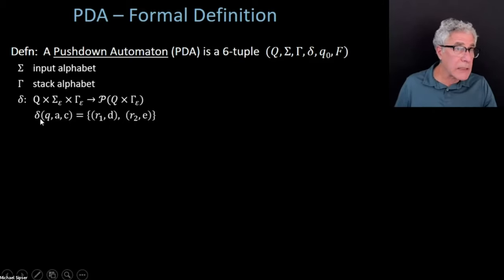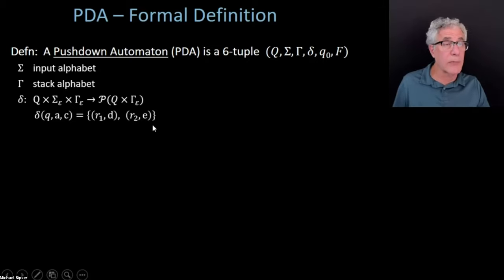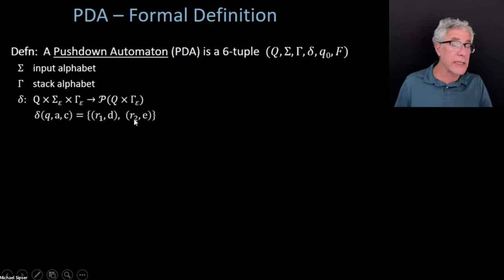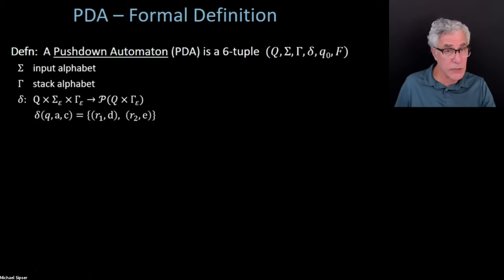To illustrate: if delta applies to some state Q, reading input symbol A and popping a C from the top of the stack, you might have two possibilities—going to state R1 and pushing D onto the stack, or going to state R2 and pushing E onto the stack.